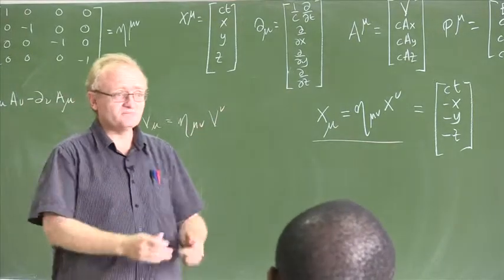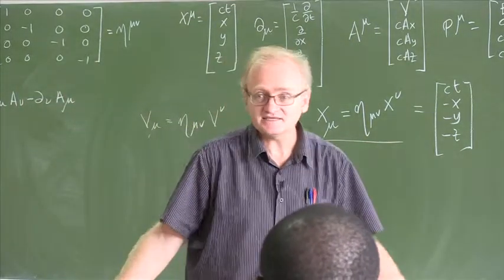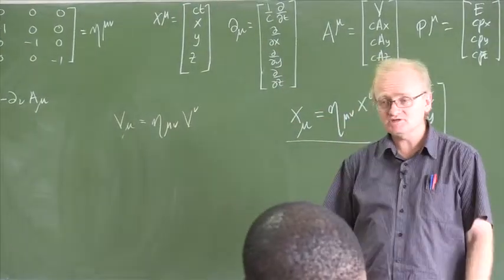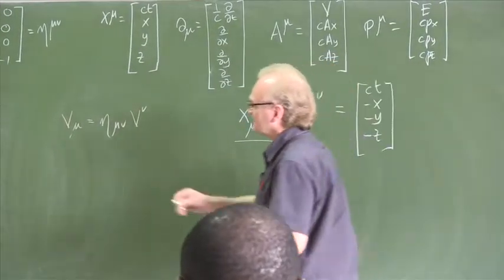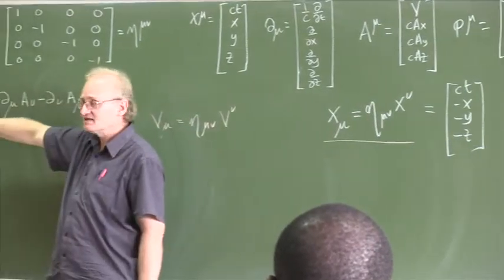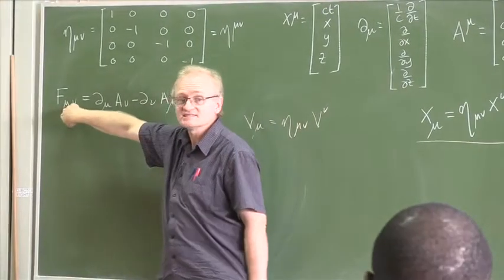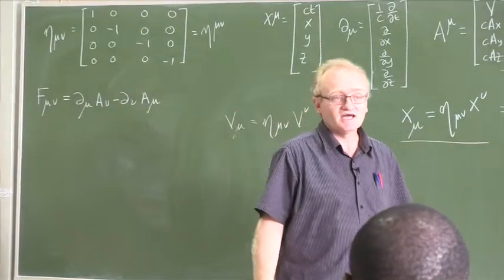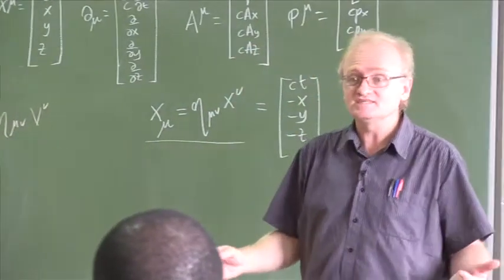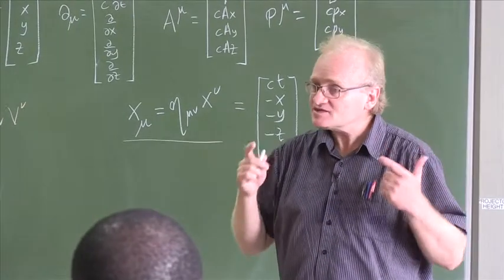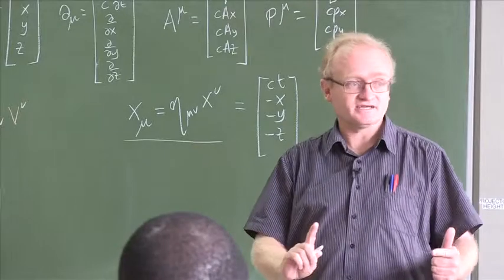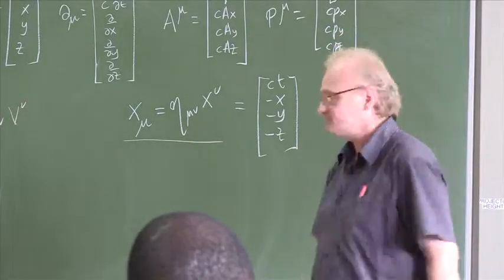When you have objects with a single index, those are vectors — that's one kind of object. But you can have other kinds of objects too, like the field strength tensor F mu nu that we started to look at. This has two indices, and you might wonder: how do we treat things with two indices? The correct way to think about this is that each index comes with a vector.